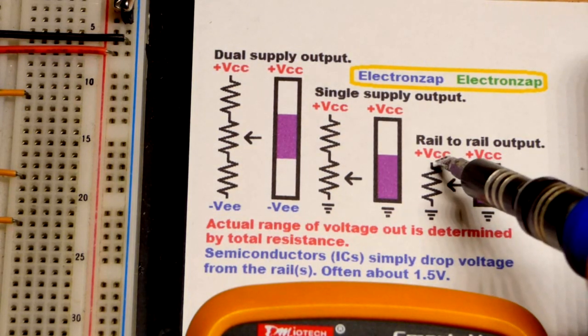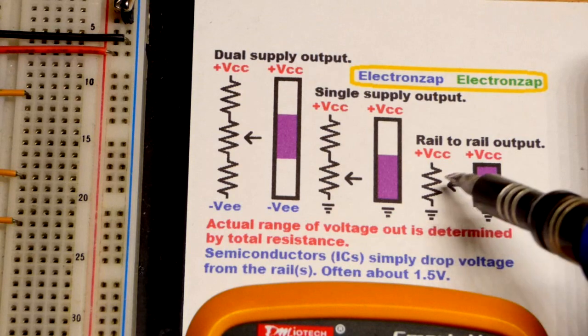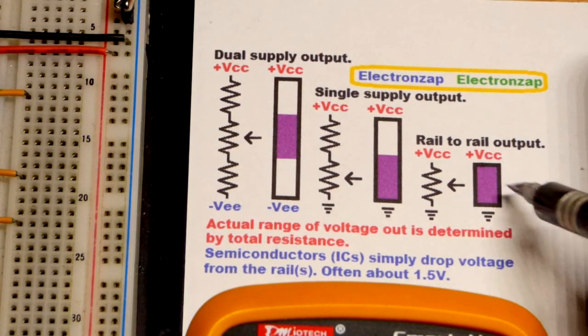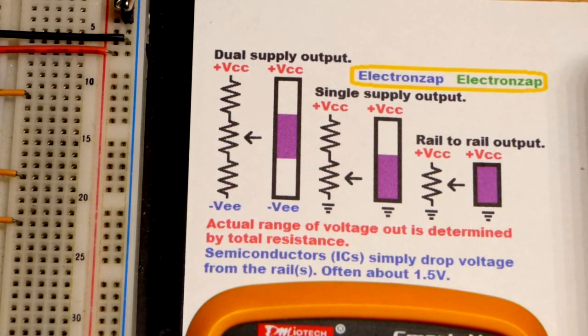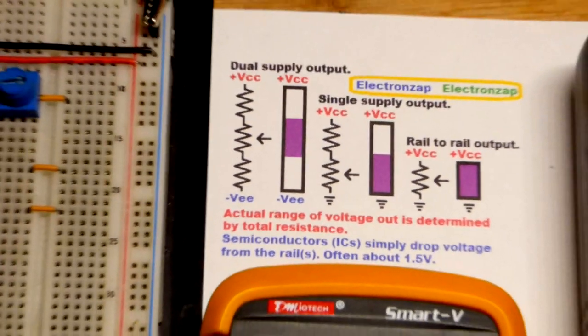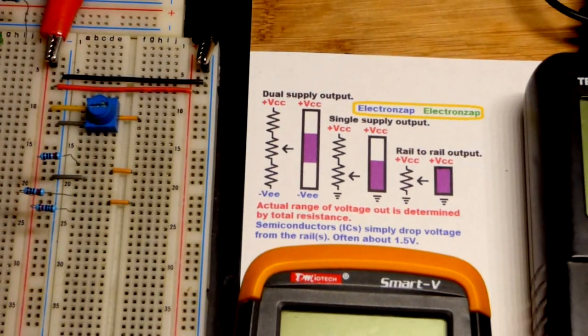Often you'll disconnect one side to the positive supply, other to the negative, and as long as you don't need to provide any current, you're just looking at the voltage, such as the multimeter will do, you have that full range of voltage that you can output from the trim pot.